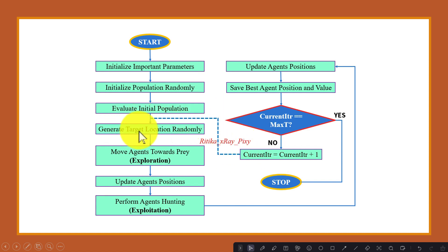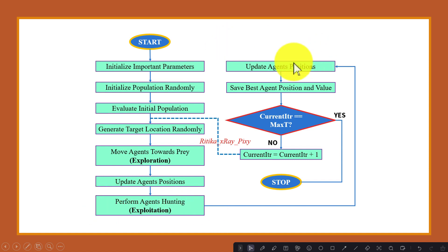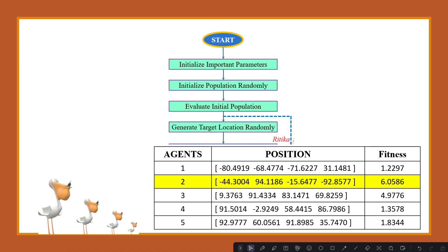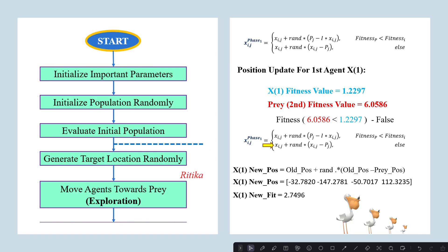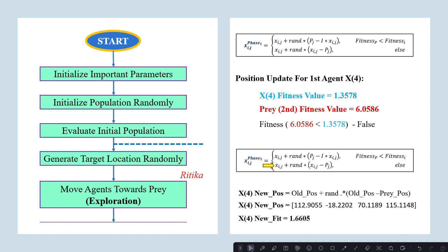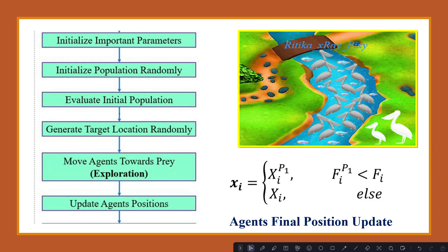In the second iteration, we again select a target randomly, perform the exploration phase to update positions, then perform the exploitation phase to update positions again, and save the best agent. We repeat this loop until the stopping criteria is met — each time selecting a target randomly, updating agent positions in the exploration phase, comparing new and older fitness values.